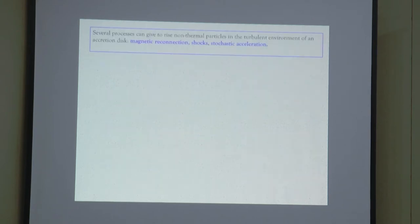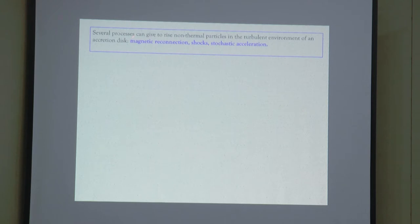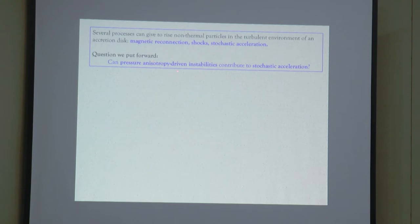What we want to do is consider whether matter as it falls into the black hole could already be producing non-thermal particles. To do that, one needs to consider all the possibilities, which include magnetic reconnection, probably shocks, weak shocks as matter falls, and also stochastic acceleration. My focus will be on a different kind of stochastic acceleration compared to the typical scenario — one where pressure anisotropy of the particles produces instabilities that can accelerate particles stochastically.